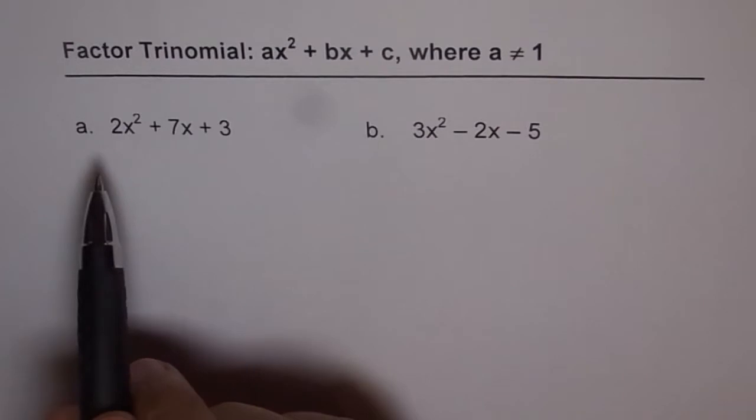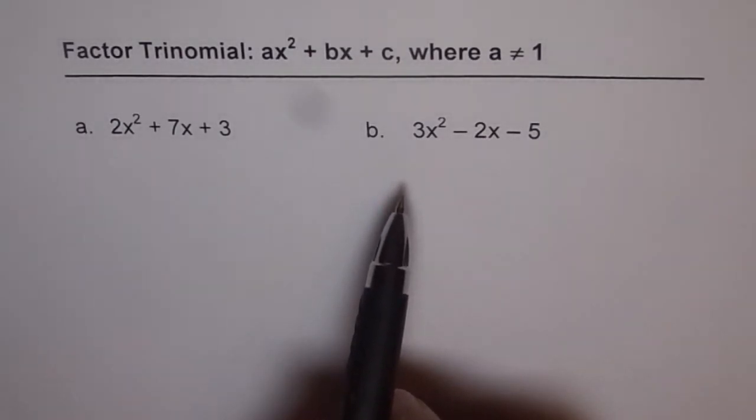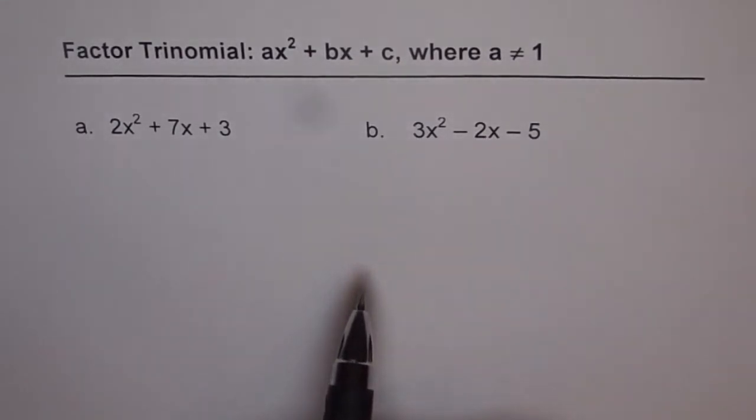The first one is 2x² + 7x + 3. Leading coefficient is 2. And the second one is 3x² - 2x - 5 where the leading coefficient is 3.